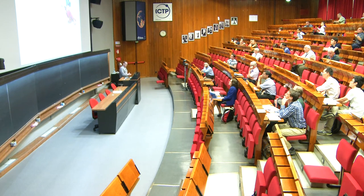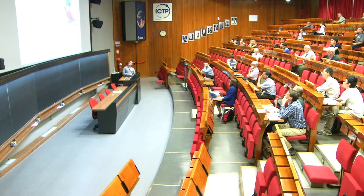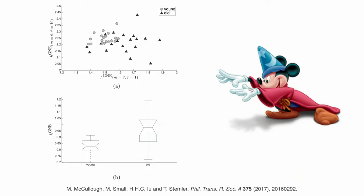If I do the same thing with a different data set, the Fantasia data set, recordings of EEG for old people and young people - young is defined as someone under 42, I didn't make the classification - watching the movie Fantasia. Again, play the same trick: build these networks, look at these entropy scores for different parameter values, different time scales, and you see these clouds of points which kind of separate young from old.